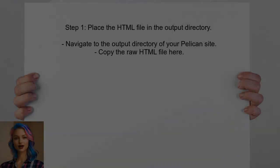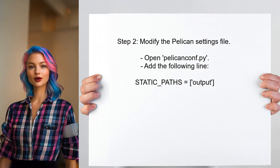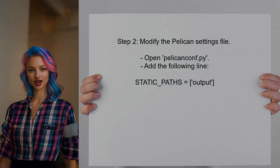To host a raw HTML page in a Pelican static website, start by placing the HTML file directly in the output directory — this ensures it will be served correctly. Next, configure Pelican to recognize this file by modifying the Pelican settings file, typically named pelicanconf.py.